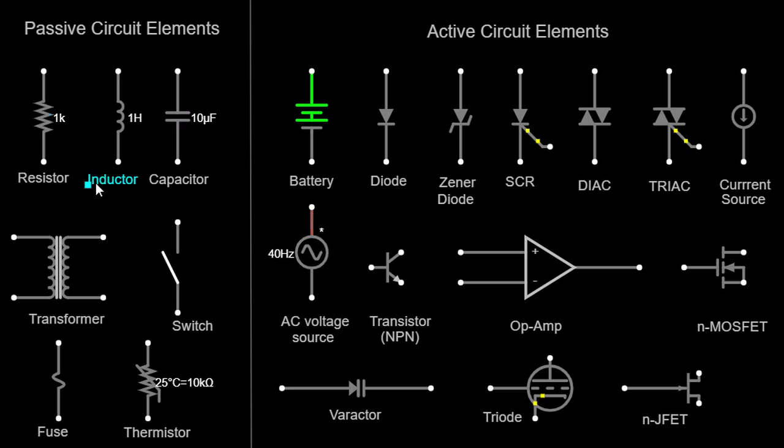Inductor. An inductor is a passive component that stores energy in the form of a magnetic field when current flows through it. It resists changes in current flow. In circuit diagrams, an inductor is represented by a coil or a series of loops.